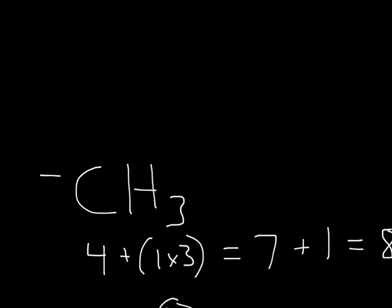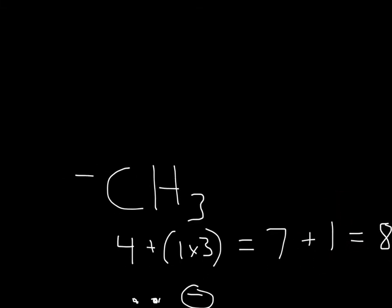So for this CH3 with the negative charge, what you do is just write out the valence electrons for each of these. Carbon has 4, hydrogen has 1, but there's 3 hydrogens, so it's 1 times 3, will equal 7. And that negative charge actually means that there's an extra electron, so you'll write 7 plus 1 is equal to 8.